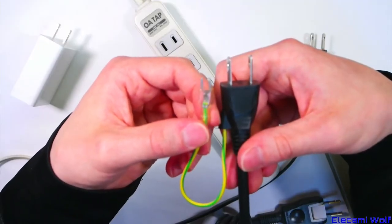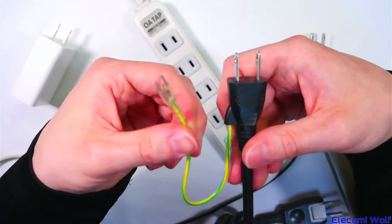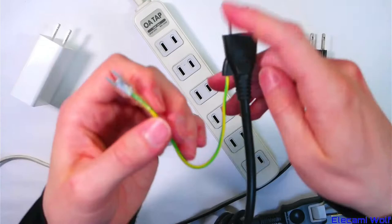When grounding is needed for an appliance, a handy ground wire is provided to connect. I have noticed that they are not usually connected.